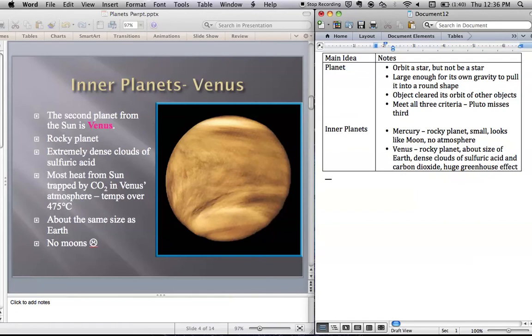So Venus is very, very hot because of its atmosphere of carbon dioxide. About the same size of Earth, but not a fun place to live.